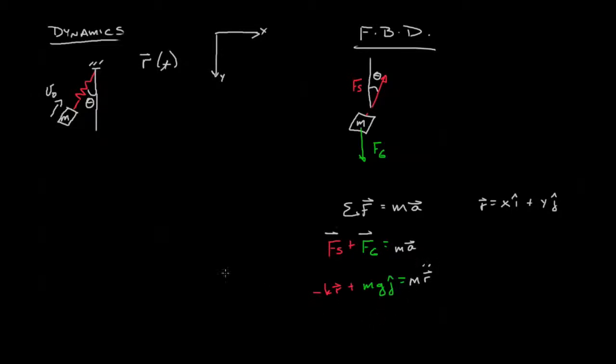The next step is to resolve that r vector into x and y components: negative k(xi plus yj) plus mgj equals the second derivative of r, which fortunately for us is nice and simple, x double dot i plus y double dot j.